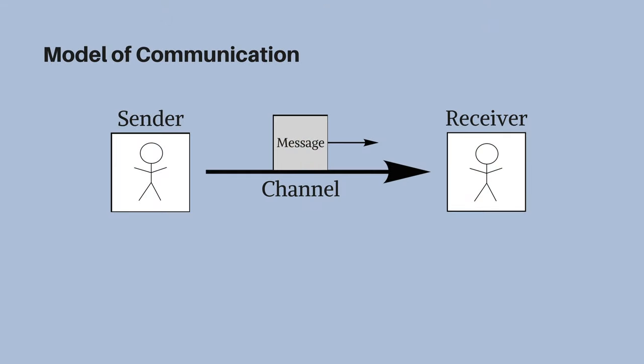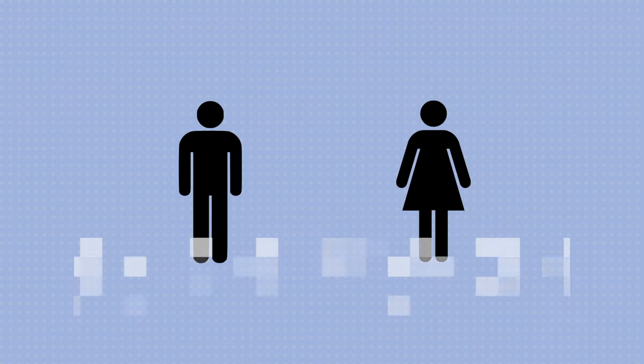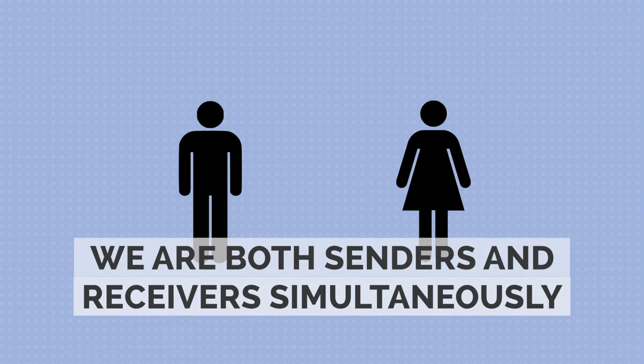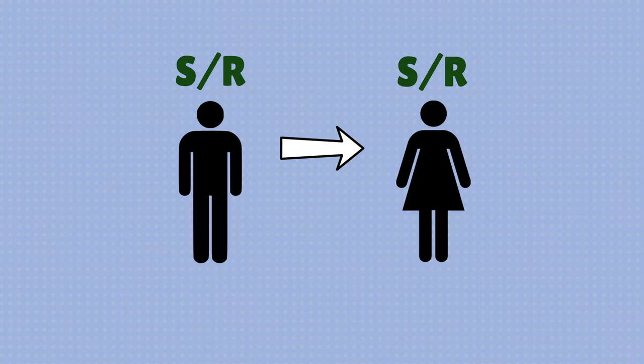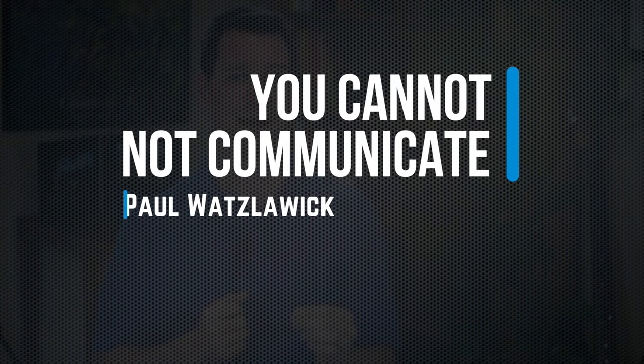First I want to talk about how this differs from Shannon and Weaver. In the Shannon and Weaver one-way linear model you have a sender and a receiver, but in the transactional approach the researchers say that we are both simultaneously senders and receivers. That means we're always giving each other feedback — both verbal and nonverbal. Paul Watzlawick used the phrase 'you cannot not communicate,' which is another way to say you're always sending and receiving messages whether you realize it or not.